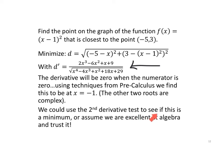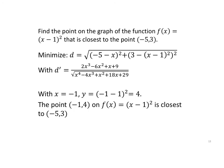We could use the second derivative test to see if this is a minimum, or, yeah, look at us. We're great. We did it. We got it right. So, when x equals negative 1, we're going to have a minimum. When x is negative 1, our y value is 4. The point (-1, 4) on the graph of f(x) = (x - 1)² is the closest to the point (-5, 3).